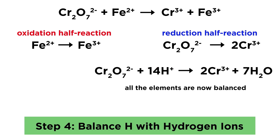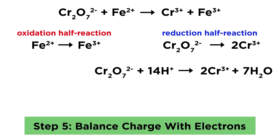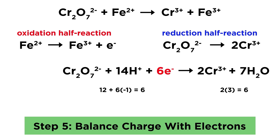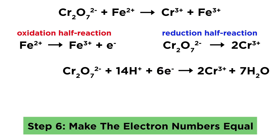This means all of the elements are balanced. Now we can balance the electrical charge for each half-reaction by adding electrons. In the oxidation, in order for iron 2+ to become iron 3+, it must lose an electron, so there must be one electron as a product here. For the reduction, it's a little trickier. We have 2 minus on the dichromate and 14 H+ for a total of 12 plus on the left. On the right, we have 2 chromium 3+ ions for a total of 6 plus. In order to balance this, we will need 6 electrons on the left to bring the charge down to 6 plus and balance the charge. Now we will need to combine these in such a way so as to cancel out the electrons.